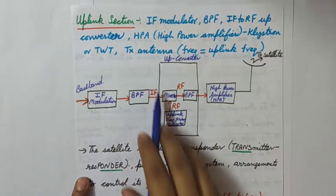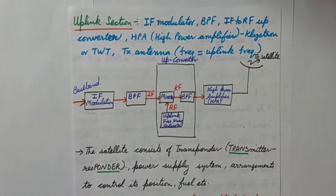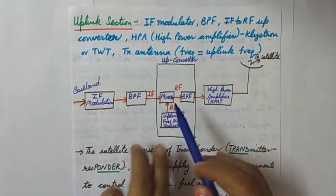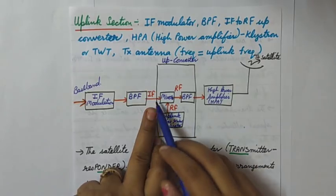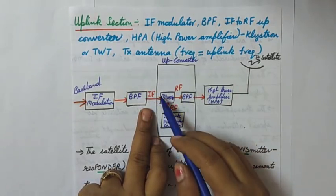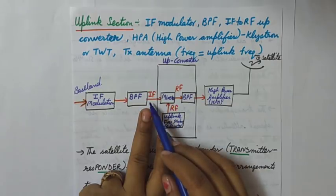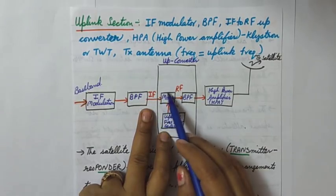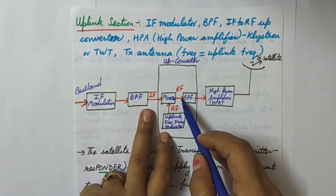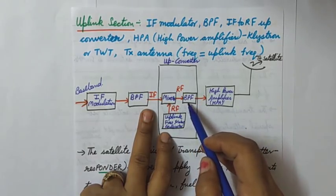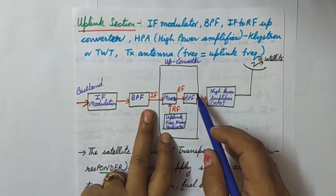The intermediate frequency obtained is then given to the up converter. The up converter increases this IF frequency to an RF range so it can be sent to the satellite through space radiation. Inside the up converter there is a mixer; a microwave generator provides an RF frequency, and when mixed with the IF frequency they produce a higher RF frequency. This is again passed through another bandpass filter to make the band precise.